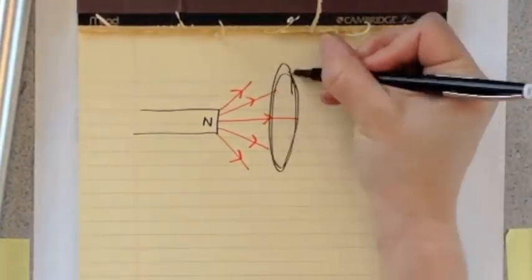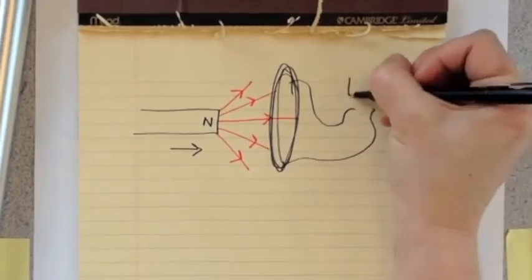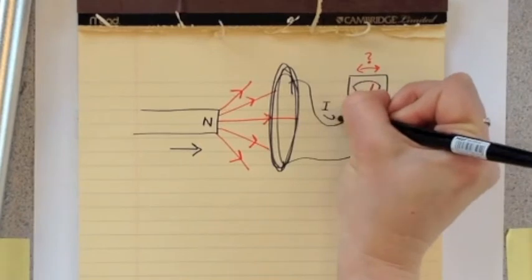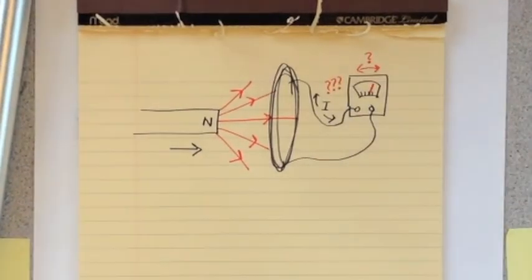These are the basic ideas behind Faraday's Law. In the next doodle, we'll look at Lenz's Law, which describes how to predict which way the current will flow.